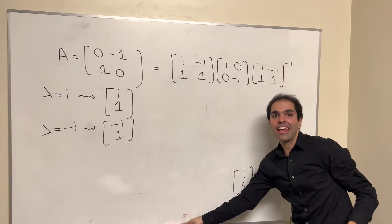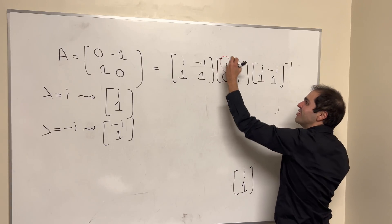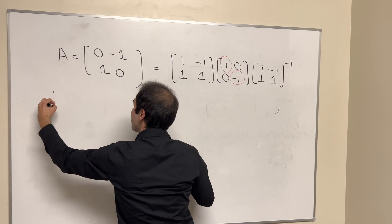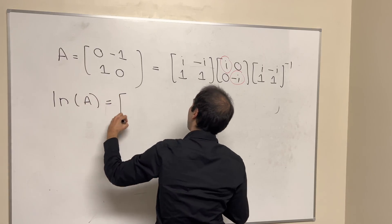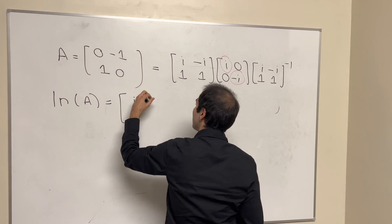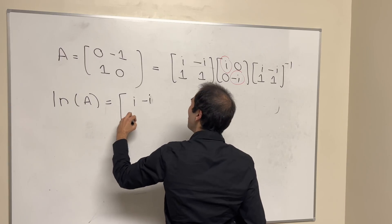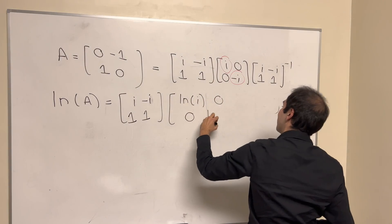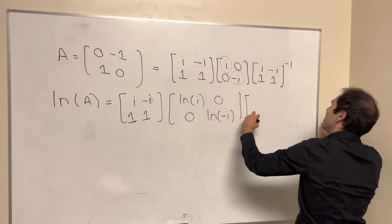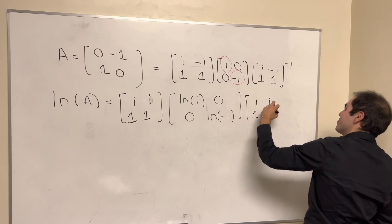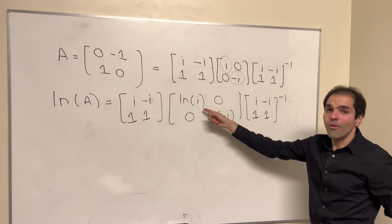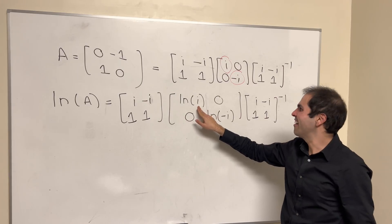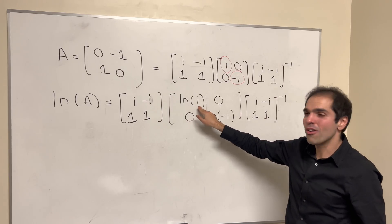Now what about ln of A? Here's a cute fact: you just have to take ln of those diagonal entries. So ln of A equals [[i, −i], [1, 1]] times [[ln(i), 0], [0, ln(−i)]] times the inverse. If you take principal logs, ln(i) = iπ/2, since i is an angle of 90 degrees.